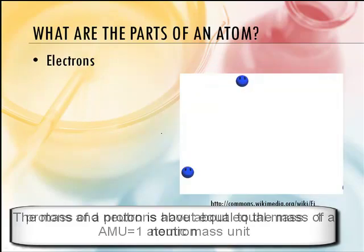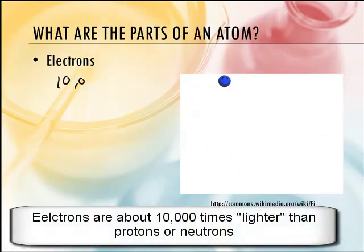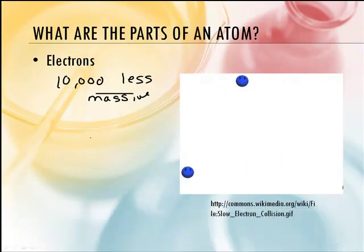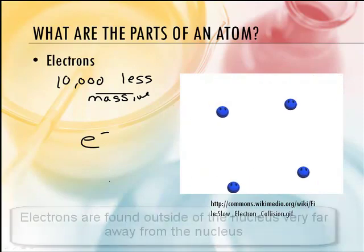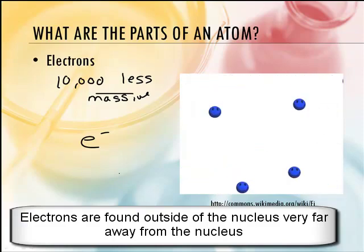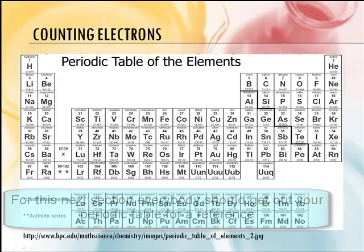And then lastly, there are electrons. Electrons are much, much smaller than protons and neutrons — about 10,000 times less massive. They are abbreviated E⁻ because they have a negative charge. And where do you find them? They're kind of buzzing around the nucleus, on the outside. Now, how do we count electrons? Let's learn how to count. If you do not have your periodic table, you should get it out.